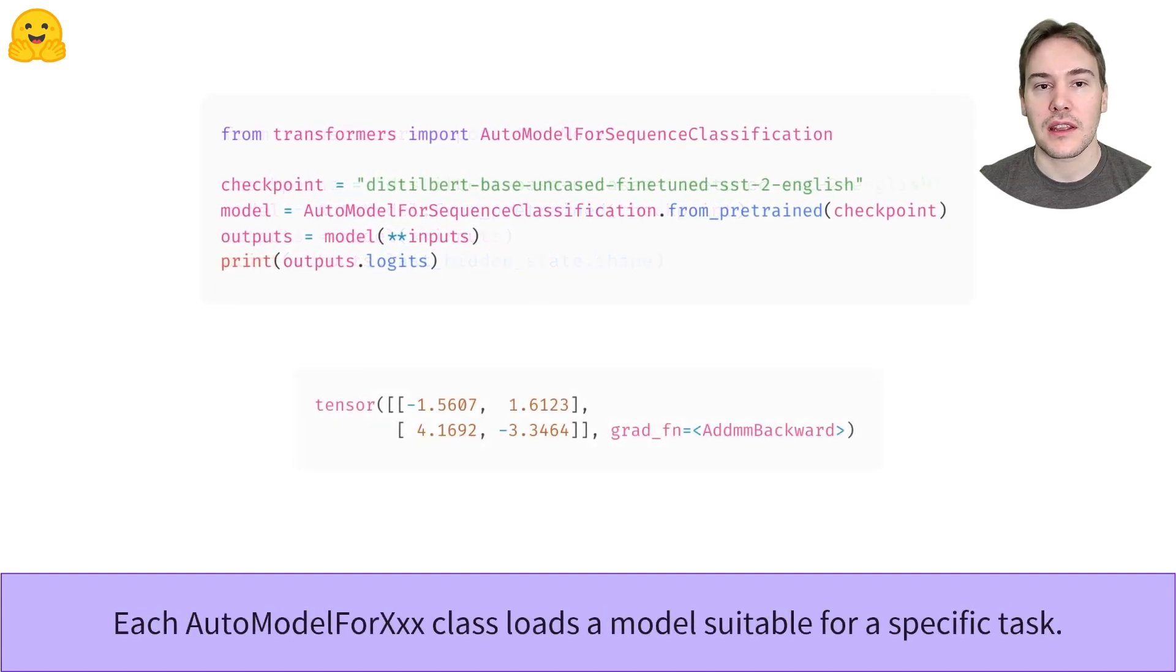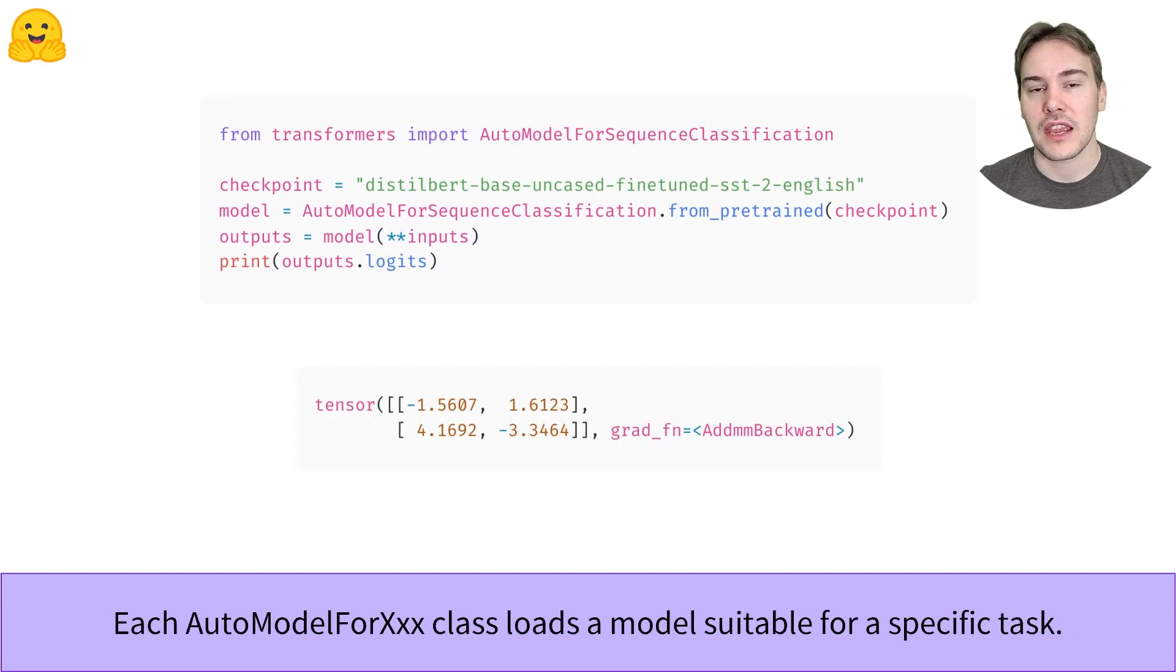To get an output linked to our classification problem, we need to use the AutoModelForSequenceClassification class. It works exactly as the AutoModel class, except that it will build a model with a classification head. There is one auto-class for each common NLP task in the transformers library. Here, after giving our model the two sentences, we get a tensor of size 2x2, one result for each sentence and for each possible label.